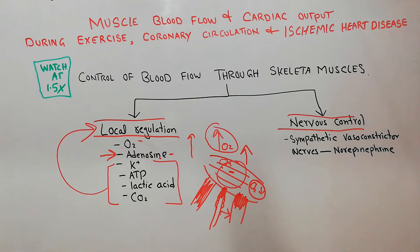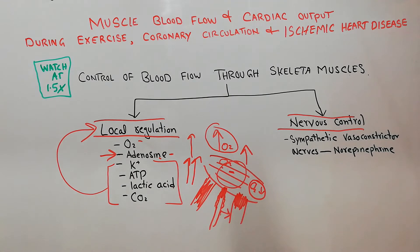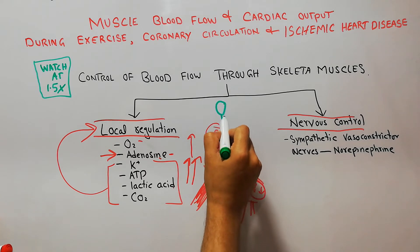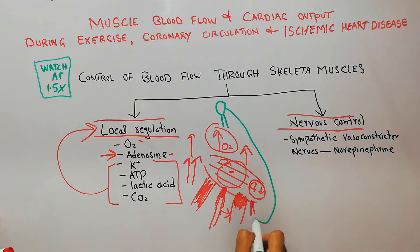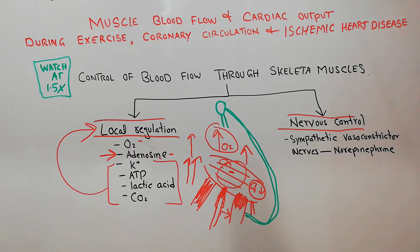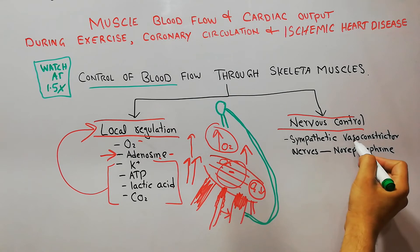Apart from the local regulation of blood flow, the nervous system also plays its role. Sometimes we need to decrease blood flow to the muscles so that blood can be diverted to places where it is more needed. Nerves come to the blood vessels directly from the brain or from the spinal cord. The most important nerves that play their role in the control of blood flow through skeletal muscles are the sympathetic vasoconstrictor nerves.